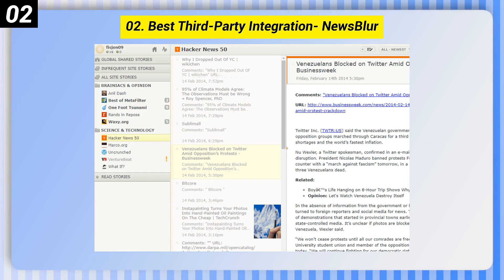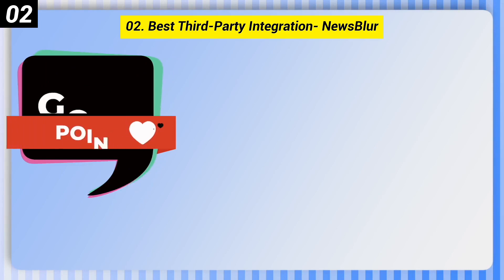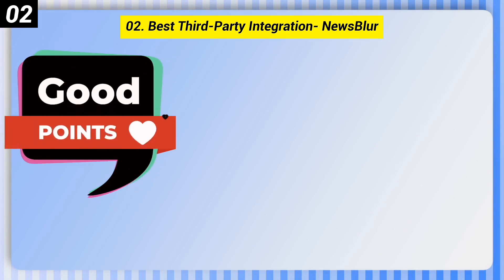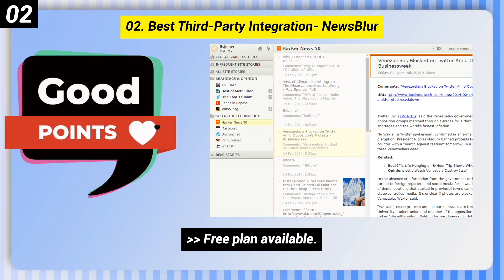Number 2: Best Third Party Integration — Newsblur. Here are some good points: Available for web and mobile. Free plan available. Affordable premium plan.